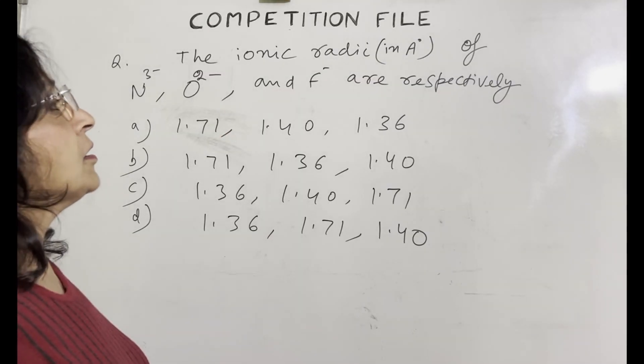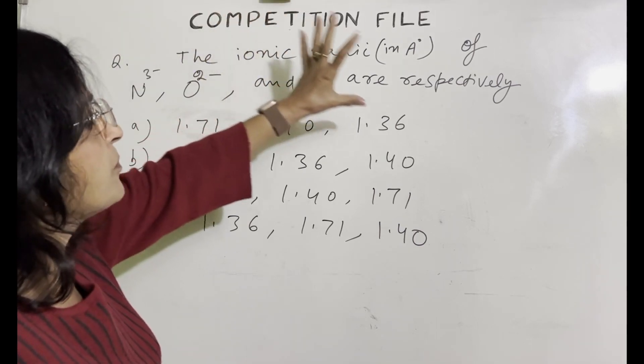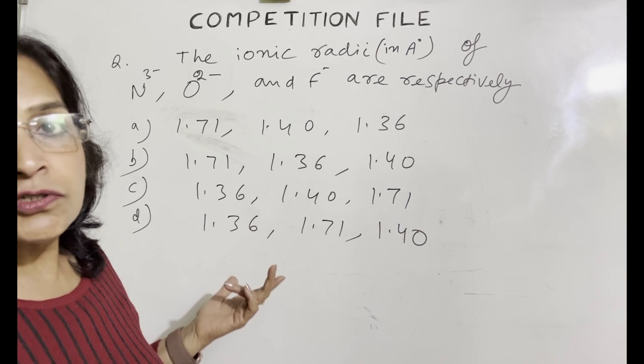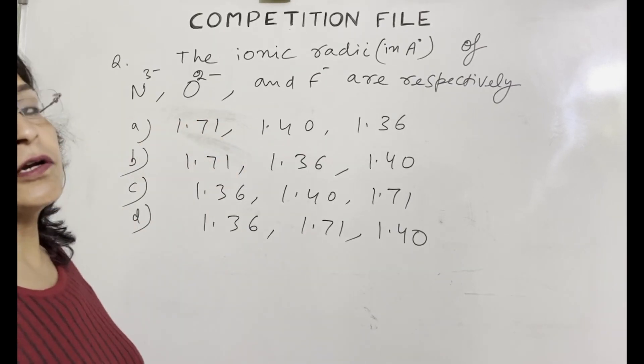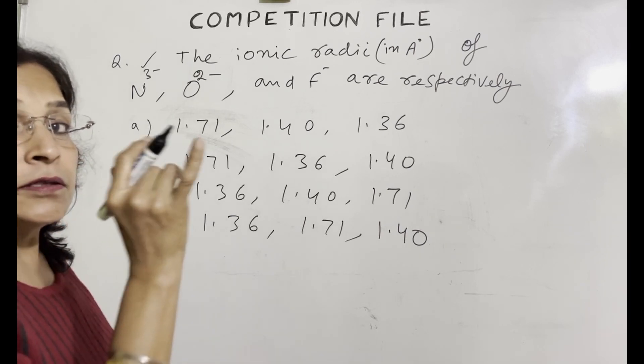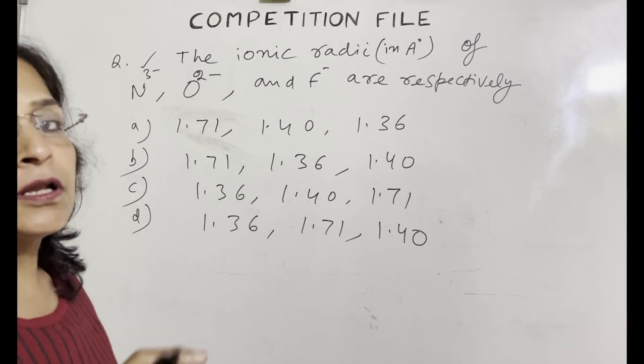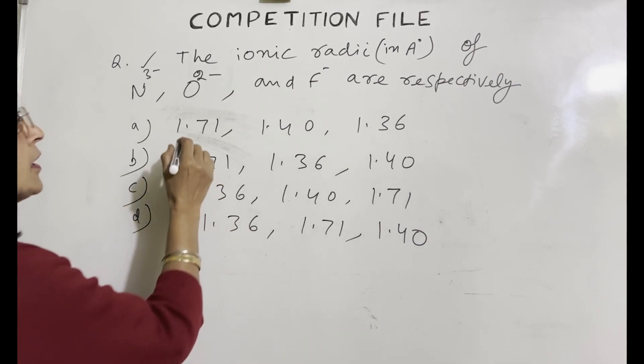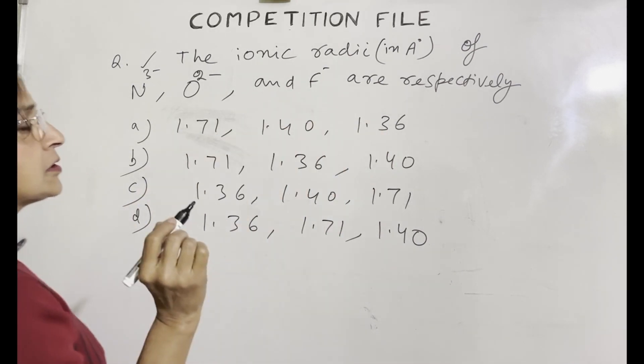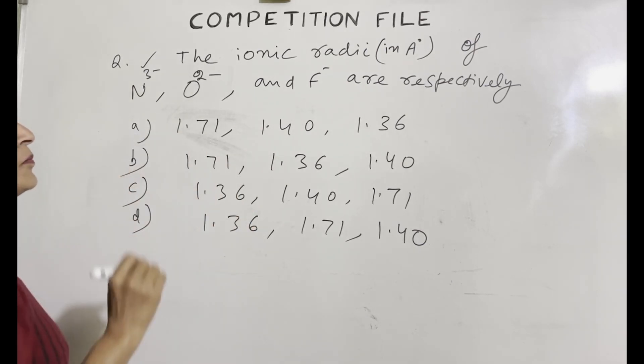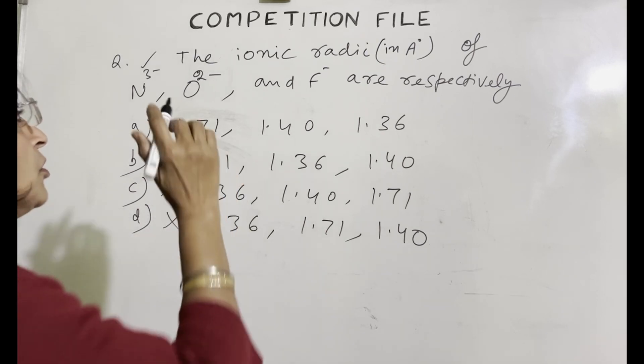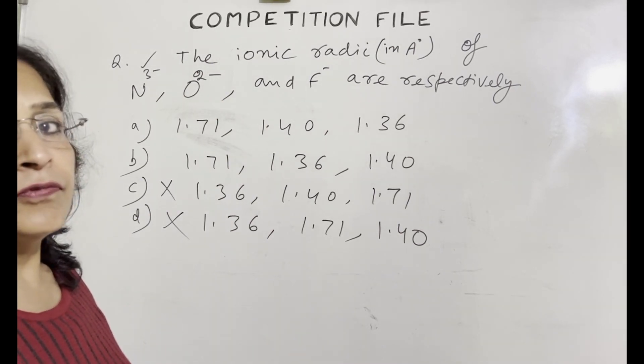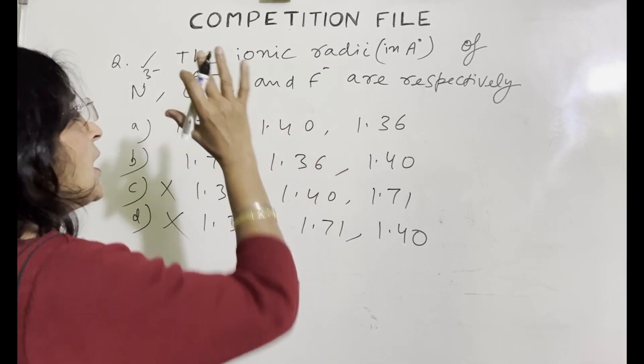Next question is the ionic radii in angstrom of N3 minus, O2 minus and F minus are respectively. Looking at the question, we don't know the values of ionic radii. So how will this question be solved? But it's not like that. These are isoelectronic species. These are isoelectronic species. So in N3 minus the negative charge is more. The difference between the number of proton and electron is more. So which is the highest value? One point seven one. So eliminate this choice first. So one point seven one. You see O2 minus. The size of O2 minus will be larger than F minus and lesser than N3 minus.